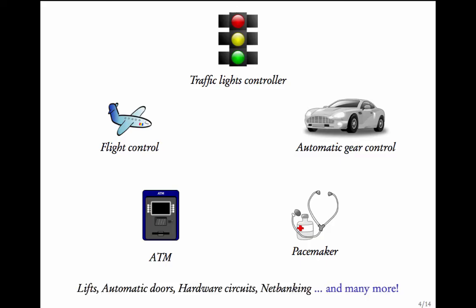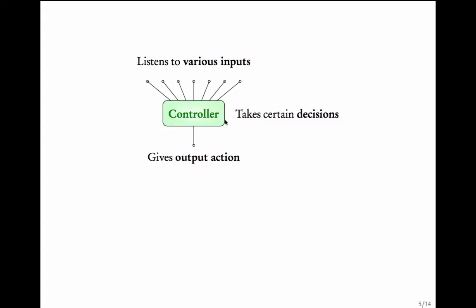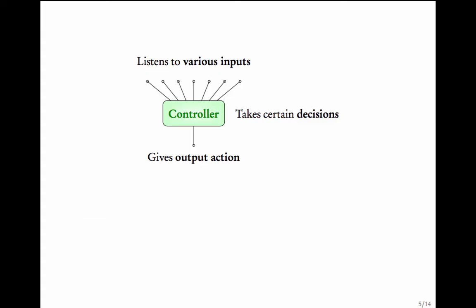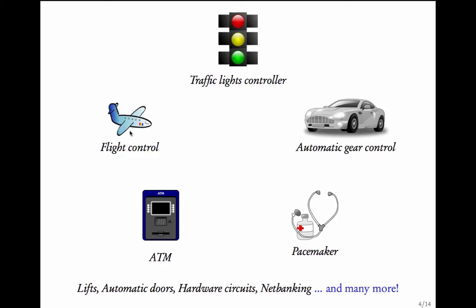There are many more examples of such systems which are crucially controlled by programs. Let us call this program the controller. A common feature of this controller is that it listens to various inputs, takes certain decisions, and gives an output action. Clearly, many of the systems controlled by programs are safety critical — for example, a flight, a pacemaker, a car, even traffic lights. All of these are safety critical systems.